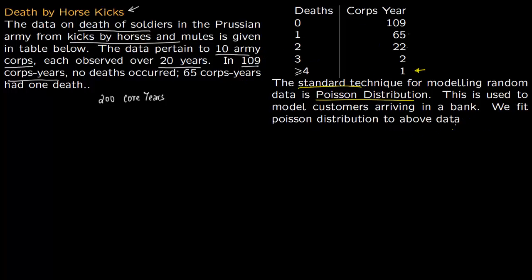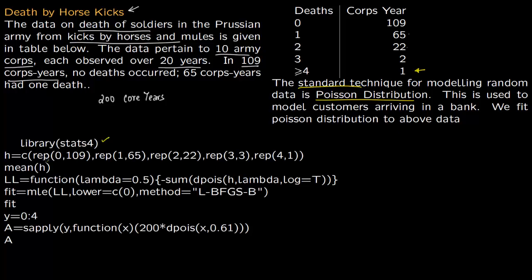We are going to fit a Poisson distribution for the above data. You use the library, then put in the data like this: you repeat zero 109 times because 109 observations had zero deaths.